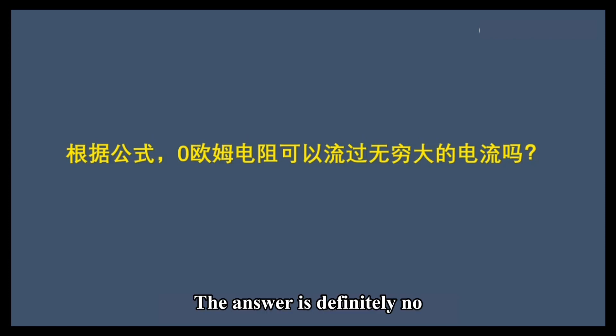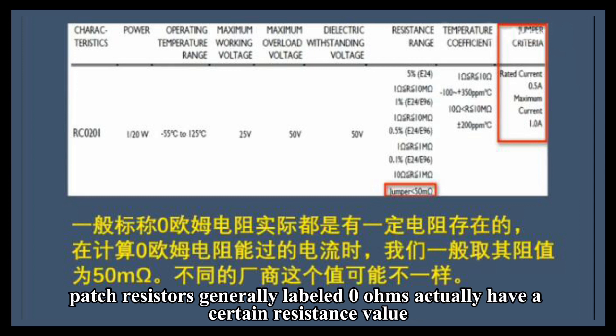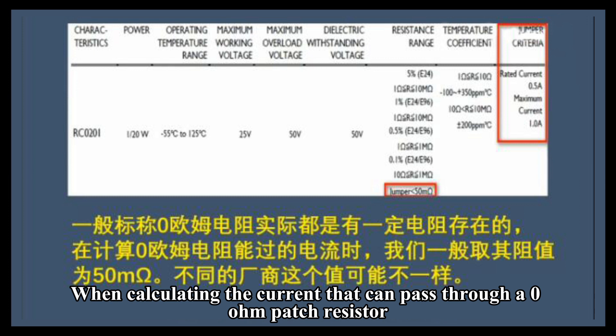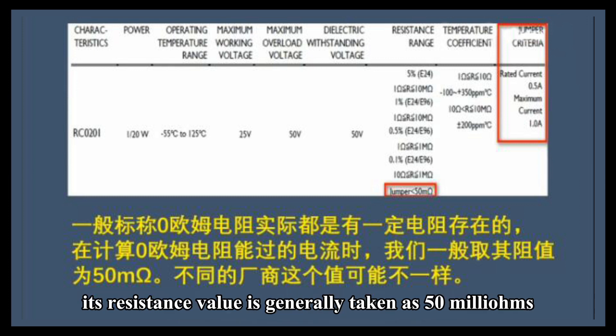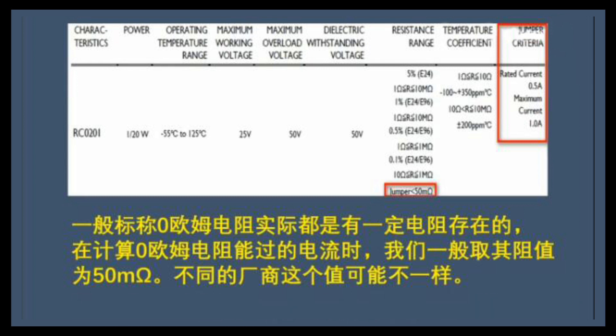The answer is definitely no. Taking patch resistors as an example, patch resistors generally labeled zero-ohms actually have a certain resistance value. When calculating the current that can pass through a zero-ohm patch resistor, its resistance value is generally taken as 50 milliohms. The values of different manufacturers may be different.